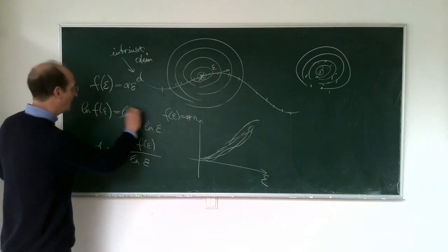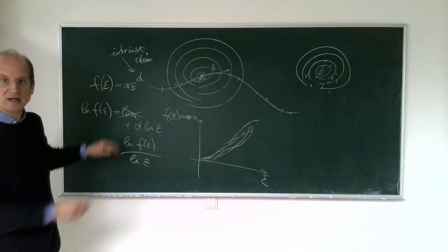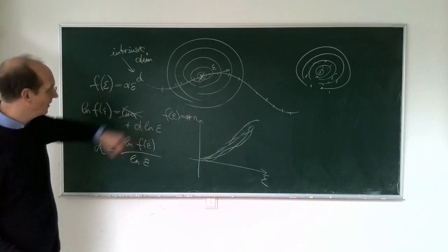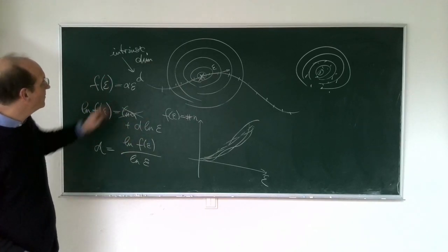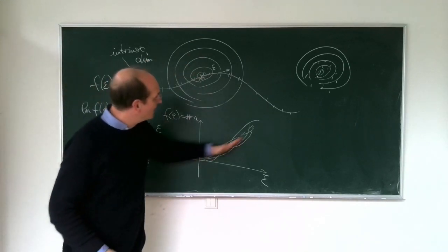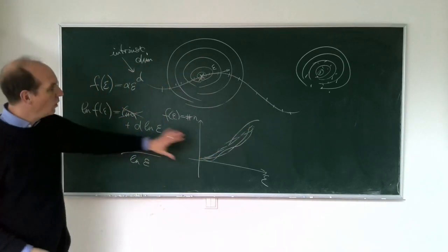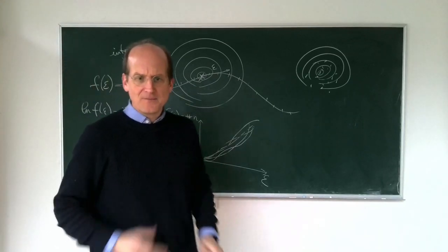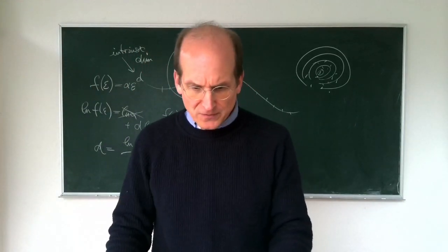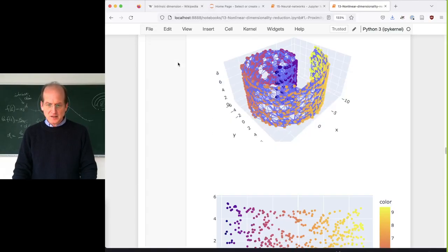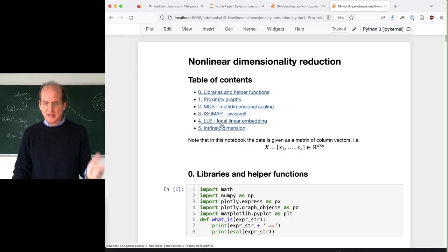I ignored the alpha here, so this is a bit sketchy - I came up with it in the morning and the formulas are still a bit rough, but you get the main idea. By growing these balls you get these curves, and by looking at the log-log plot you can estimate the parameters. I did a little notebook for that and added it to the nonlinear dimensionality notebook - it's uploaded already so you can play around with it.